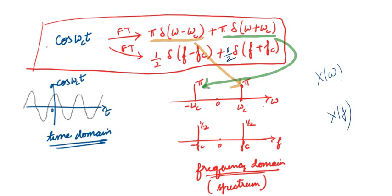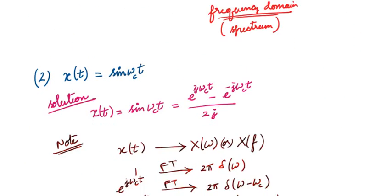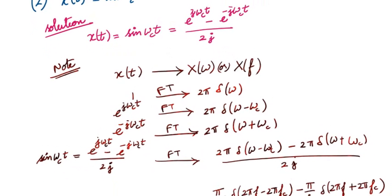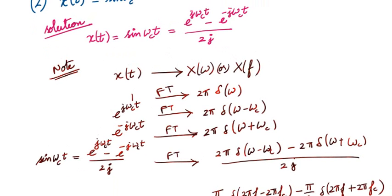Now we will see the next problem: sin(ωct). We know that sin(ωct) = (e^(jωct) − e^(-jωct)) / 2j. Using the same frequency shifting property, in place of e^(jωct) we write 2π·δ(ω − ωc), and in place of e^(-jωct) we write 2π·δ(ω + ωc), divided by 2j.